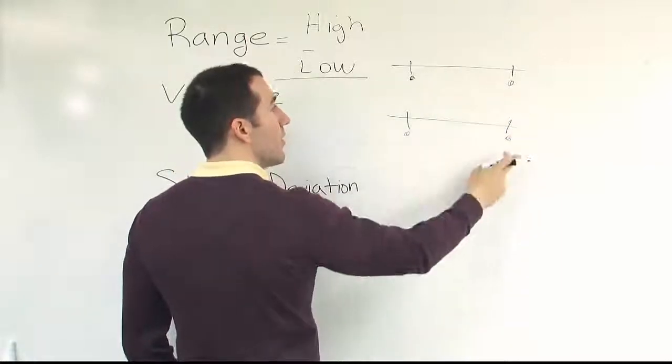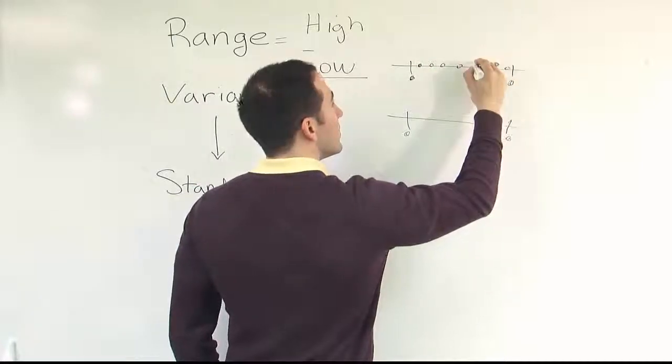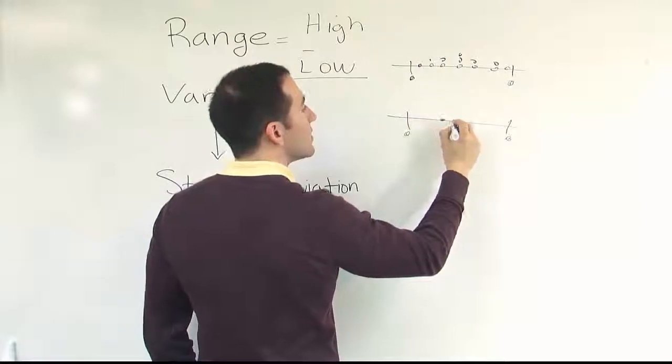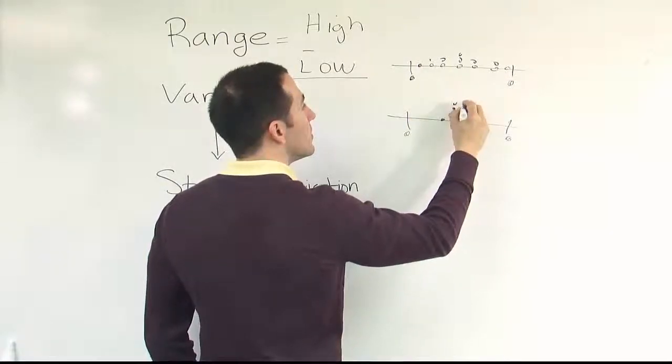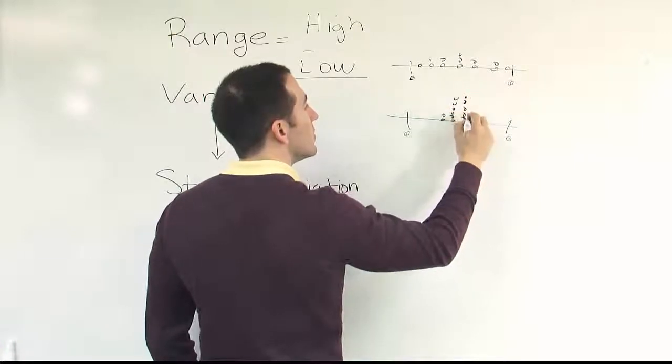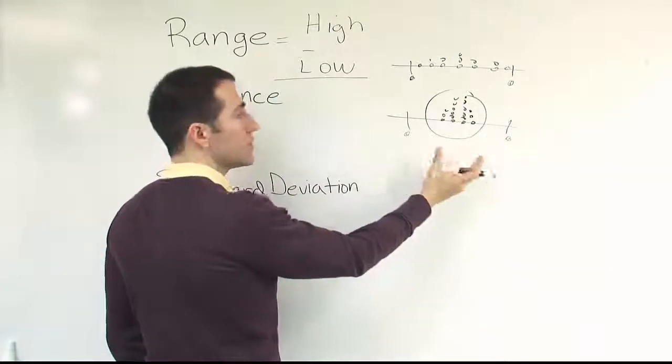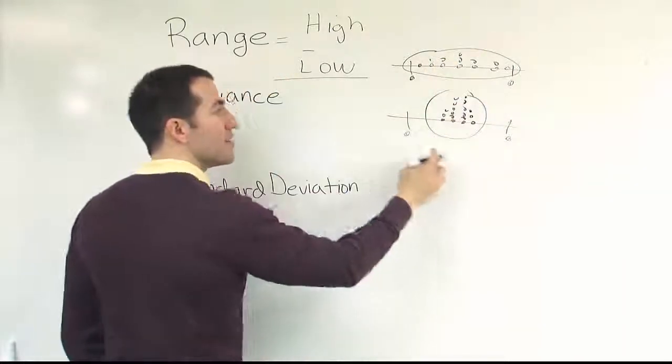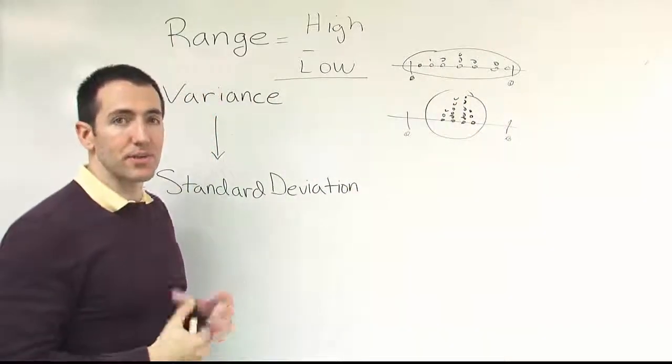But one that looks like this versus one that looks more like this. When I look at this one, I say, wow, this is much more clustered, much less varied than this one. This is more diffuse, more spread out, yet they have the same exact range. And this sort of captures the problem with the range as a measurement of variation.